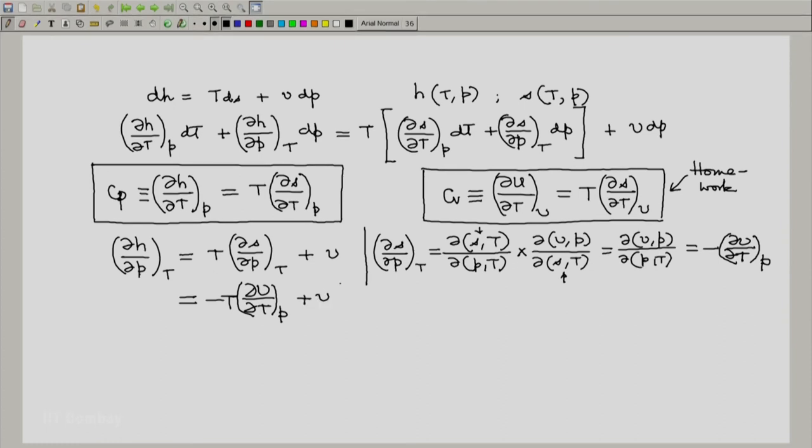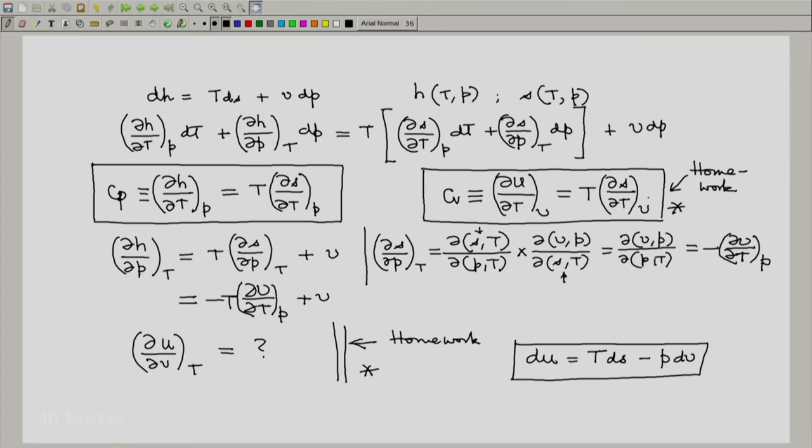I will leave it to you to obtain a similar form for partial of U with respect to V at constant T. This is homework. For both expressions, start from the relation for U: T dS minus P dV. Starting with this, you will get the extended expression for CV as well as the expression for partial of U with respect to V at constant T. Thank you.